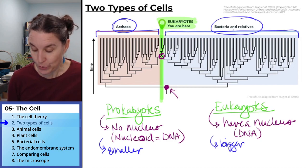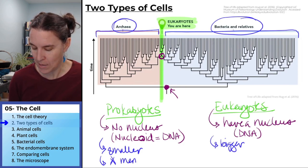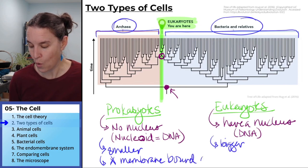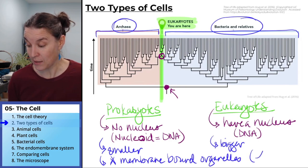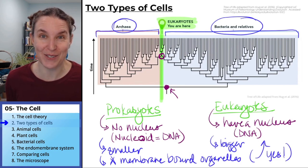Prokaryotes do not have membrane bound, they know this is a no. No. No membrane bound organelles. But eukes do have membrane bound organelles.